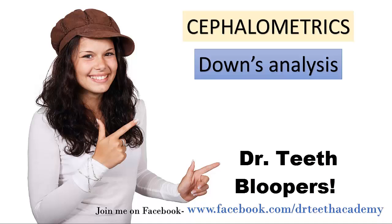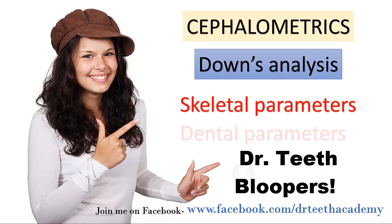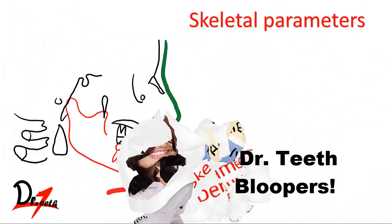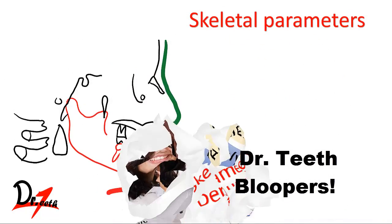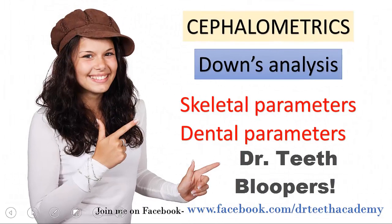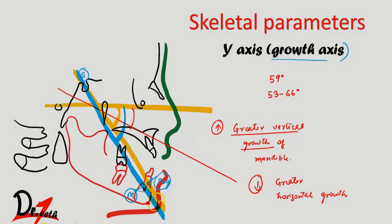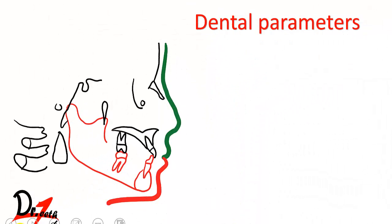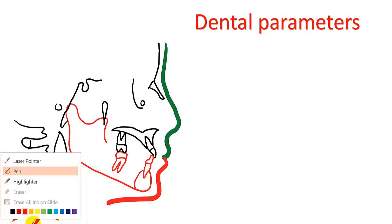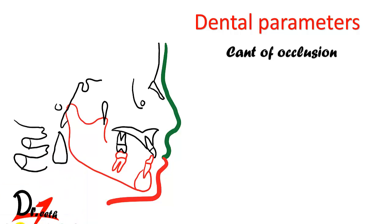In Downs analysis we have five skeletal parameters and five dental parameters. Now we come to the dental parameters. The first one is the cant of occlusion. This angle is between the occlusal plane and the FH plane — this is our FH plane, which we know by now.